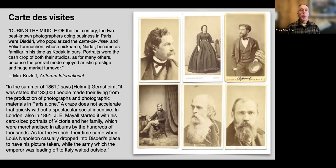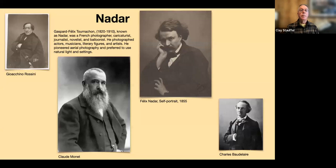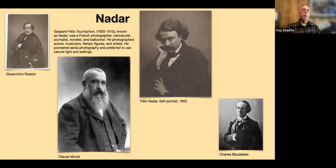According to Helmut Gernsheim, 33,000 people made their living from the production of photographs and photographic materials in Paris alone in the summer of 1861. This was a craze which followed daguerreotype mania a little bit earlier. One of the most famous French photographers at the time was Gaspard-Félix Tournachon, known as Nadar. We have him to thank for a number of great images of intellectuals and artists at the time — Baudelaire, Monet, Rossini — it's a real treasure trove. He was a really interesting person: a balloonist, novelist, journalist, caricaturist.